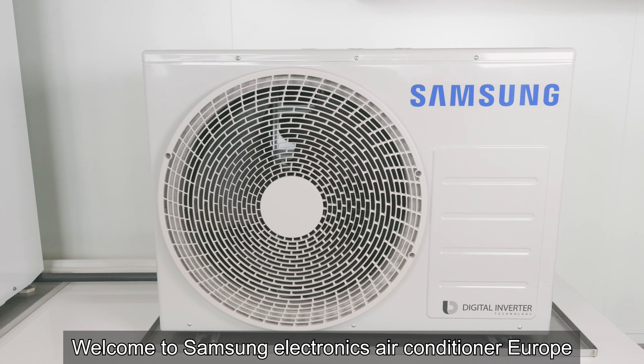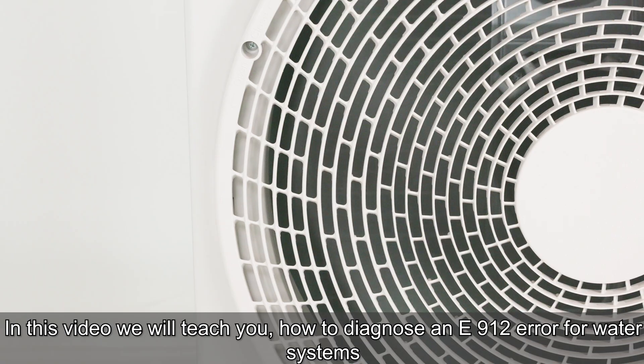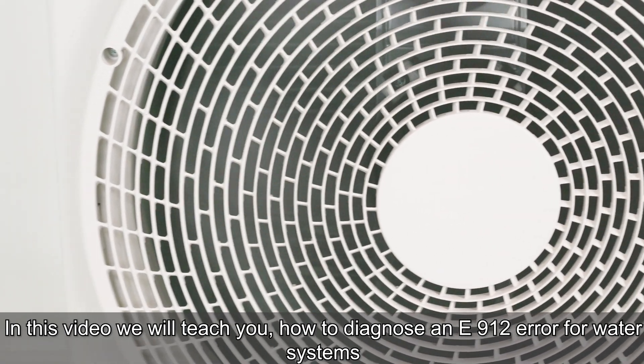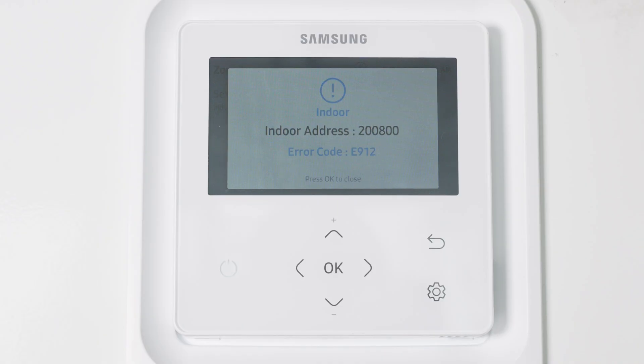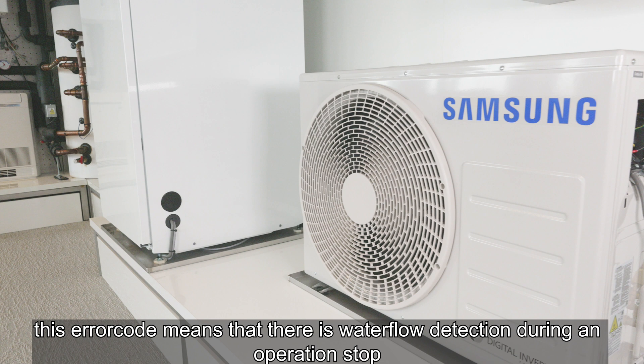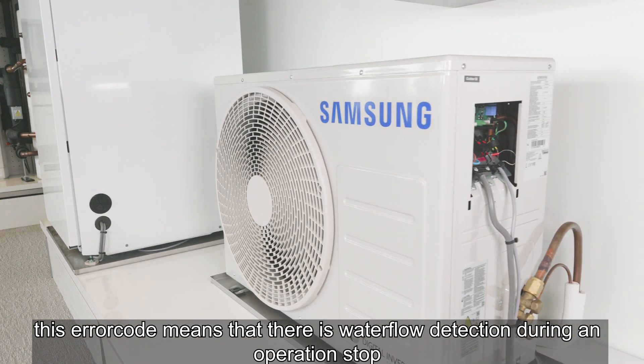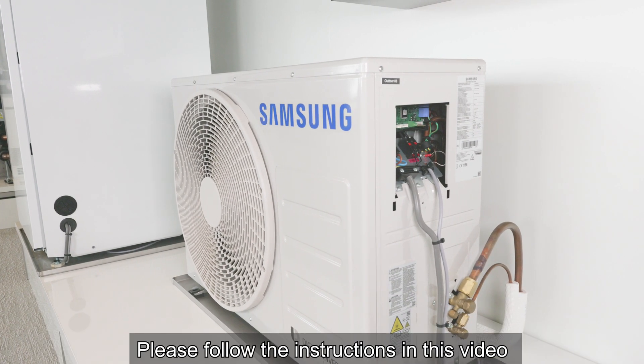Welcome to Samsung Electronics Air Conditioner Europe. In this video we will teach you how to diagnose an E912 error for water systems. This error code means that there is water flow detection during an operation stop. Please follow the instructions in this video.